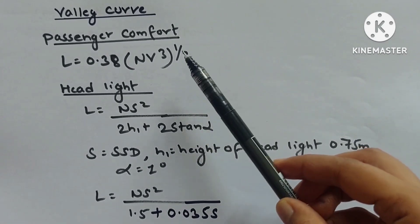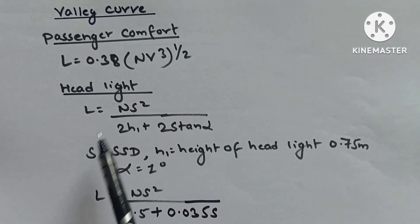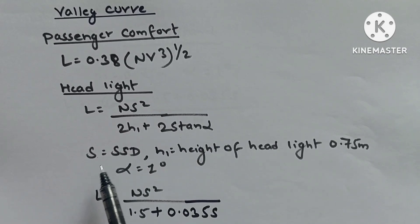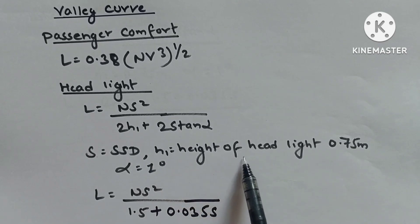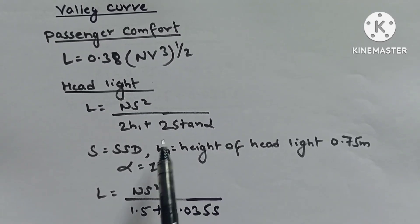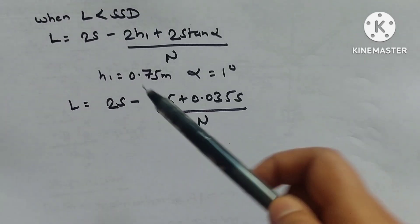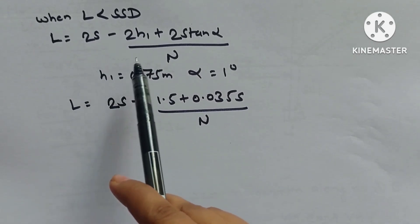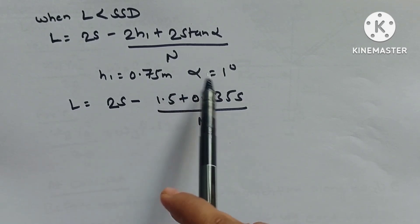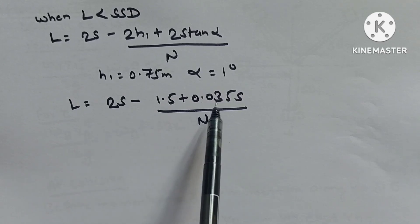Valley curve: Passenger comfort condition — L = 0.38V³/². Headlight condition — L = NS²/(2H₁ + 2S·tan α), where S = SSD, H₁ = 0.75 m, α = 1°, giving L = NS²/(1.5 + 0.035S). When L < SSD, L = 2S − (1.5 + 0.035S)/N.